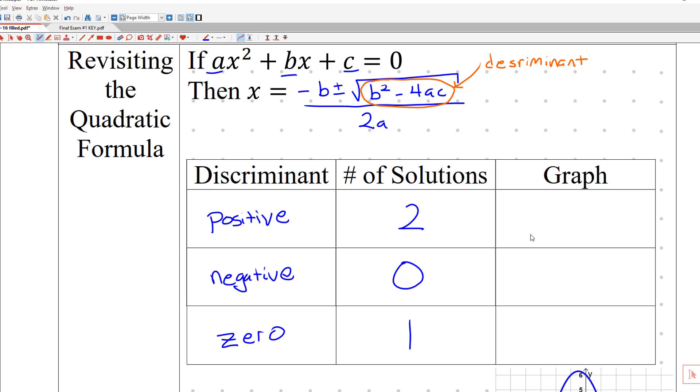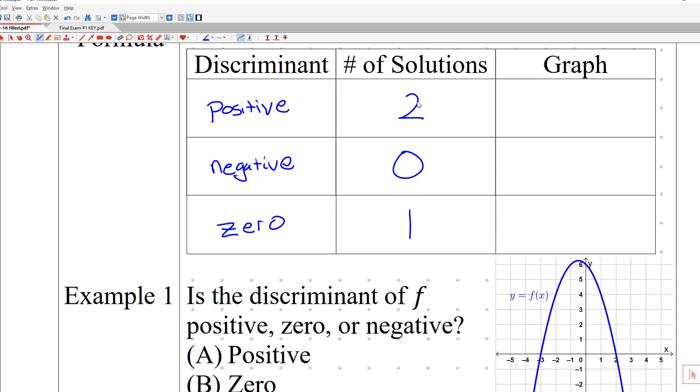What does that look like graphically? That's going to be the first few example problems that we have. So if I have a positive discriminant, I have two solutions. So you can have a graph that looks like that. It intersects the x-axis at two spots. Or maybe it can be upside down, it doesn't really matter. Either way, I can have something that looks like that.